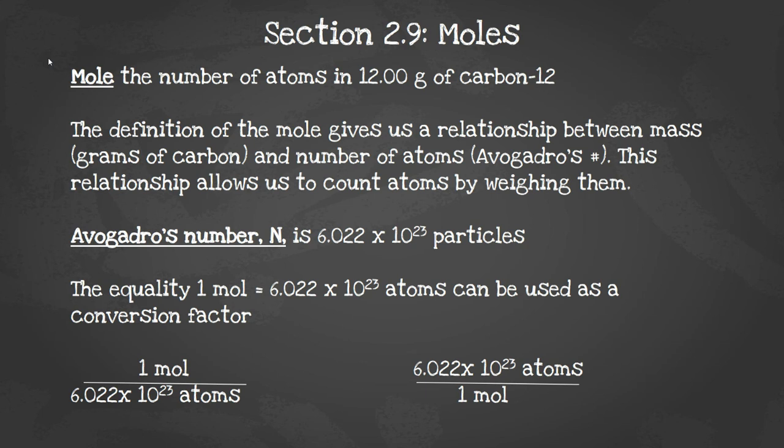This relationship allows us to count atoms by weighing them. Avogadro's number, which is capital N for abbreviation, is 6.022 times 10 to the 23rd particles. The equality 1 mole equals 6.022 times 10 to the 23rd atoms can be used as a conversion factor, and it can be written as 1 mole over Avogadro's number or Avogadro's number over 1 mole.